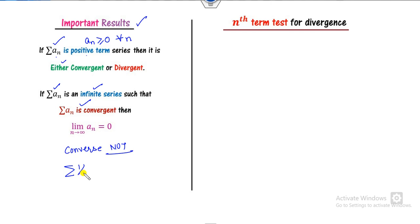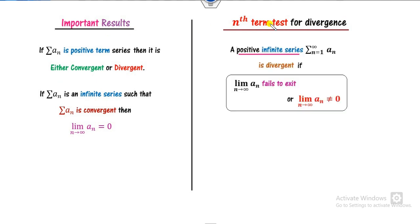The converse is not true, as we will see in a couple of examples — where A_n goes to 0 but the series is still divergent. Now, the first test studied in this video is the nth term test for divergence. Remember, this test is used only to check whether the series is divergent. If you have an infinite series, the summation of A_n, it is said to be divergent under certain conditions.